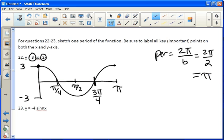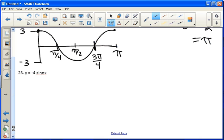Okay, on 23, same or similar process. We need to first draw the shape. This is a negative with the sine. So I'm going to start in the middle like always, but I'm going to go down first and then up instead of the other way around. My amplitude is 4. So I go as high as 4 and as low as negative 4.